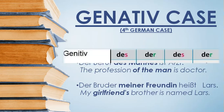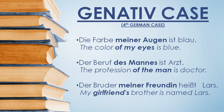Let's look at three examples. First: 'Die Farbe meiner Augen ist blau' — the color of my eyes is blue. Here 'Augen' is plural, so we use 'meiner'. Second example: 'Der Beruf des Mannes ist Arzt' — the profession of the man is doctor. Here 'Mann' is masculine, so '-es' is added.